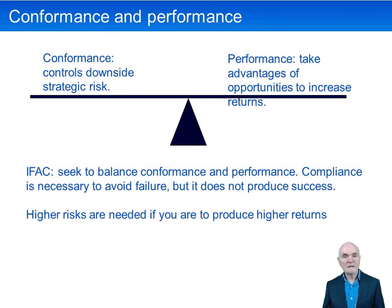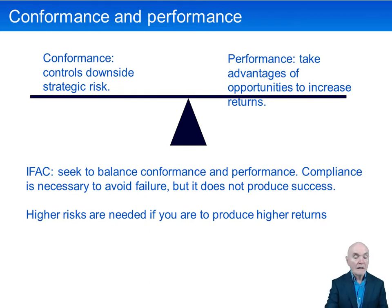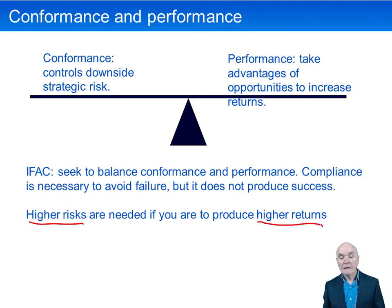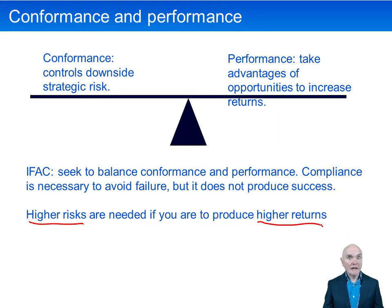We have this balance between performance — taking risk hoping for better profits — and conformance, where we control people's risk taking, mitigate it, and stop spending on a project if it seems irredeemably bad. Compliance with rules and regulations to limit risk is necessary, but generally higher risks are needed to produce higher returns.